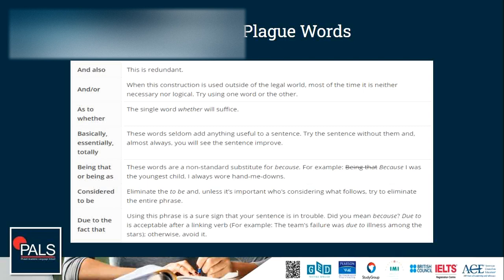'As to whether' — just use the single word 'whether.' 'Basically,' 'essentially,' 'totally' — these are fillers, especially when we're talking. These words seldom add anything useful to a sentence, so try the sentence without them, and almost always you will see the sentence improve. We're just so used to them because they fill the dead air when we're talking, but that doesn't work when we're trying to write an essay.